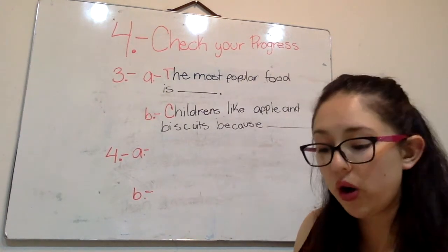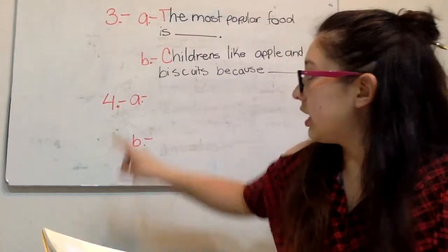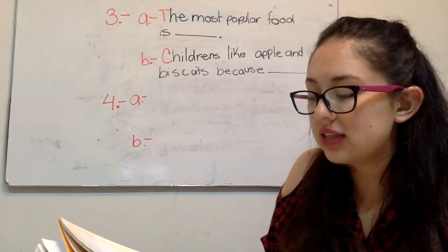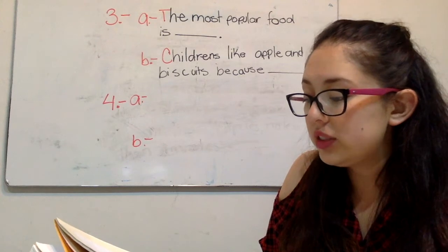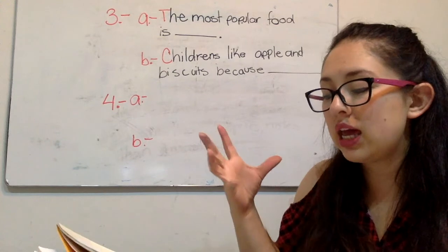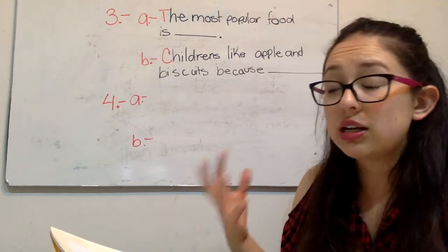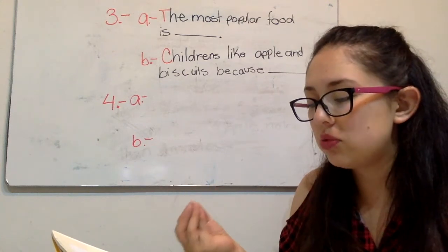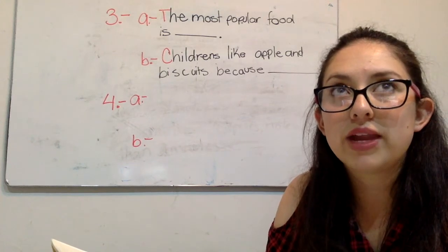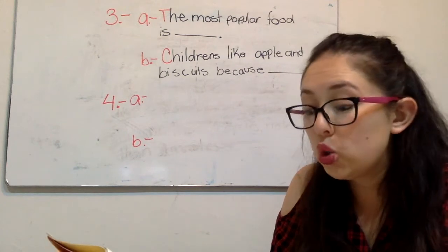Now number four. Number four letter a, describe how to carry out a taste test, include details of the equipment you will use. Vamos a escribir cómo podríamos describir y detallar cómo podríamos hacer un examen para saber cuánto funciona nuestro sentido del gusto y todo lo que usarías para hacerlo.